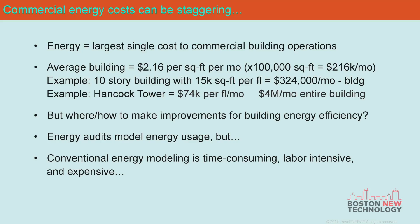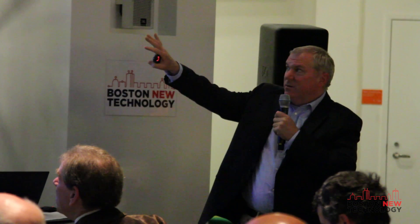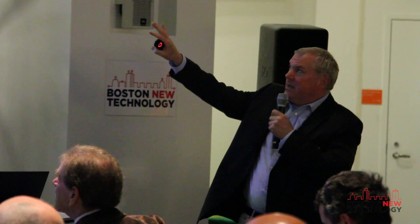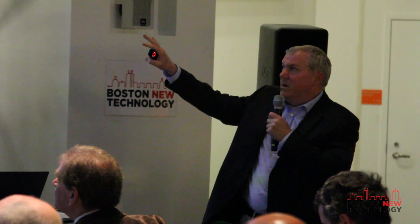Energy is the largest single cost to a commercial building. The average building is over $2 per square foot per month. An example of a simple 10-story building with 15,000 square feet per month is over $300,000 a month in energy costs. A bigger example — Hancock Tower — you're talking millions of dollars a month.